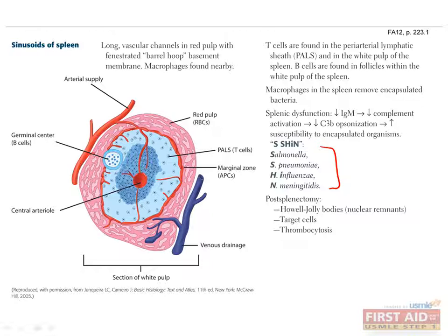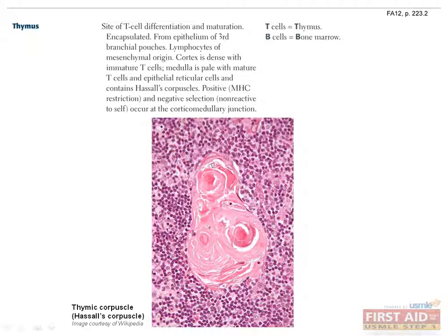The marginal zone between the red and white pulp of the spleen is where antigen-presenting cells are found. The thymus is the site of T cell differentiation and maturation — thymus for T cells, bone marrow for B cells. In terms of its embryology, the thymus is an encapsulated lymphoid organ derived from the epithelium of the third branchial pouches. Like the lymph node, the thymus consists of a cortex and a medulla. The cortex houses immature T cells, while the medulla — M for mature — contains mature T cells, as well as reticular cells and Hassall's corpuscles, which are concentrically arranged dead reticular cells. The corticomedullary junction is the site of positive and negative T cell selection, which we'll discuss later.